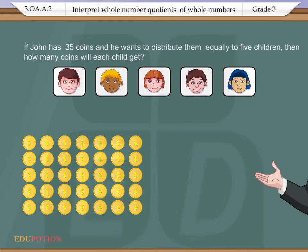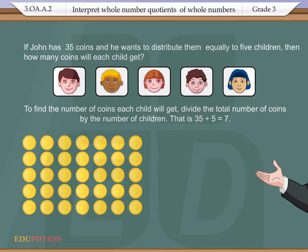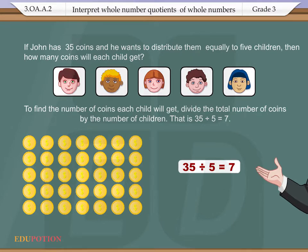then how many coins will each child get? To find the number of coins each child will get, divide the total number of coins by the number of children. That is, 35 ÷ 5 = 7.